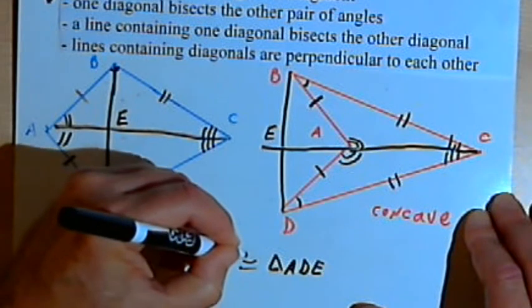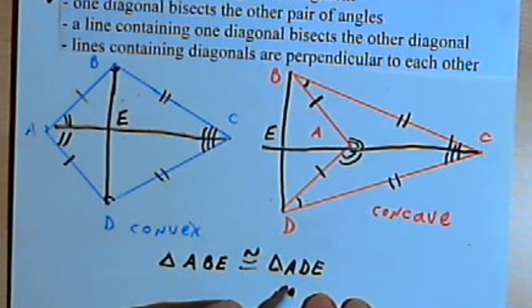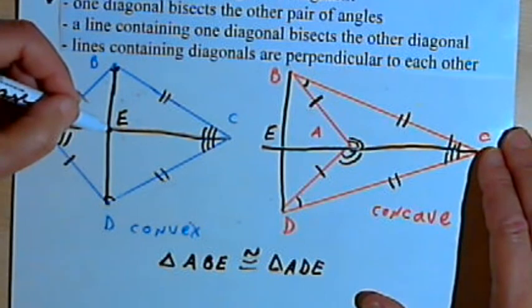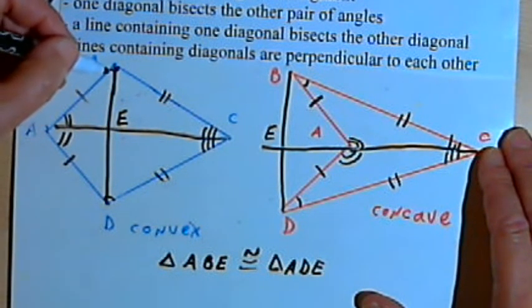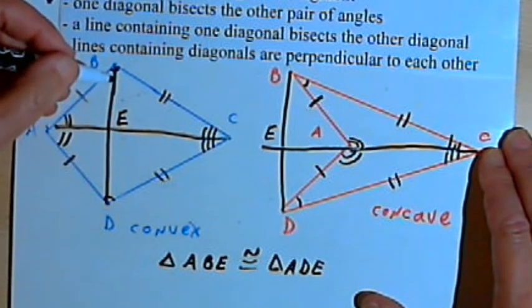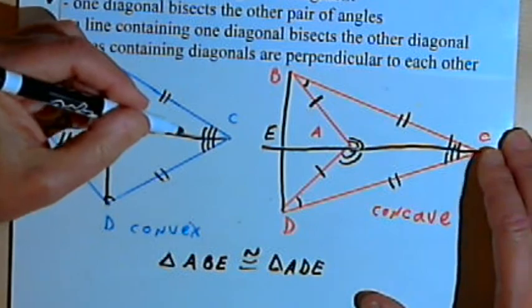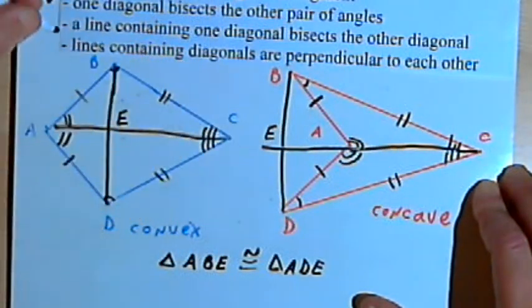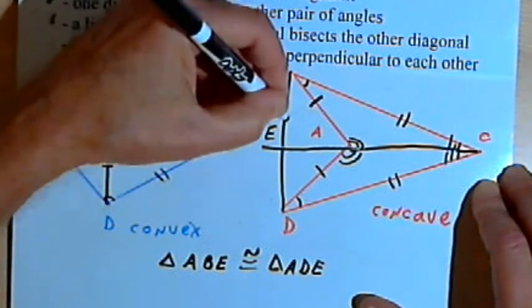Therefore in both cases, I've got two congruent triangles, ABE and ADE. If they're congruent, that means that BE is congruent with DE, so BD, which was the diagonal, has been bisected, in one case by the other diagonal AC, in the other case by the line containing the diagonal AC. But in both cases, I've bisected that diagonal.